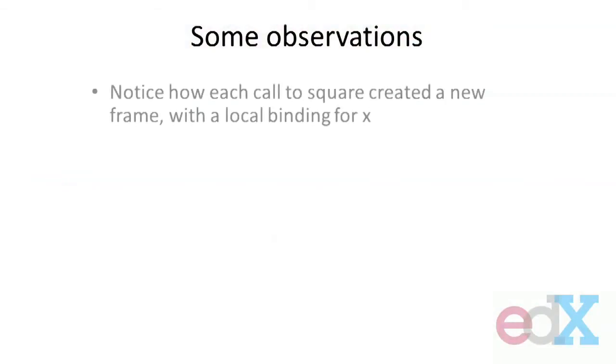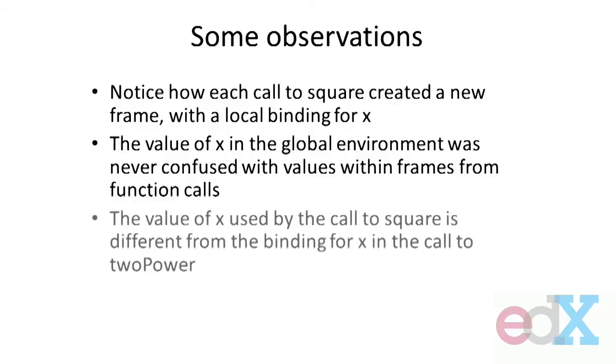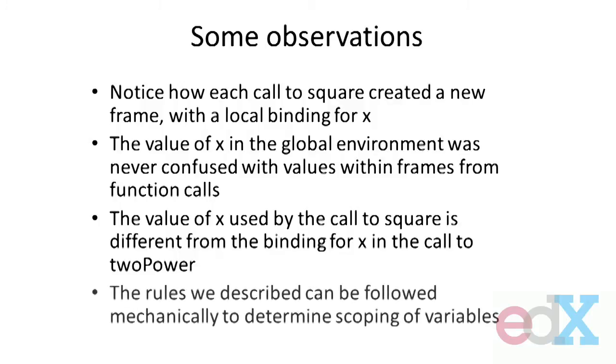So, let's capture that. Notice how each call to square created a new frame with a local binding for x. The value of x in the global environment was never confused with the value being used for square, or the value being used inside that iterative loop inside of twoPower. That value of the call to square is different from that binding for the value inside of twoPower. So each one of those was kept separate. And as a consequence, these rules make it clear that we can mechanically keep track of the right value. The other thing this does is it lets us go back to that earlier issue: can I reuse the same variable name? I can have the same variable name in different procedures because the rules for invoking the procedure keep track of which value matters. If this is confusing to you, walk through an example again, just to see for yourself how each procedure call creates that local context, that lexical scoping that captures what versions of the parameters are important to each computation.